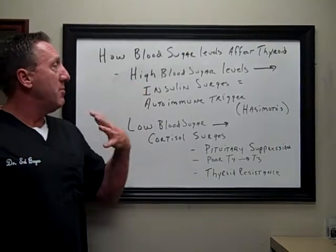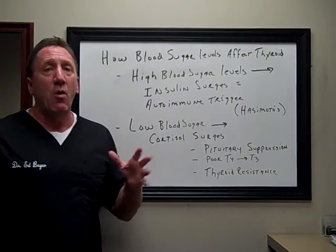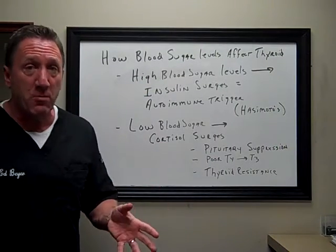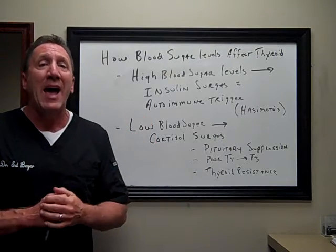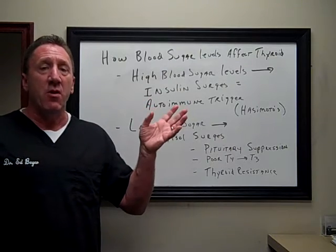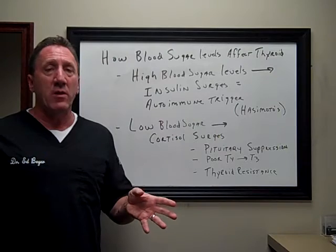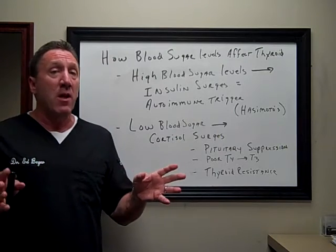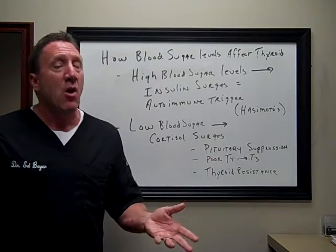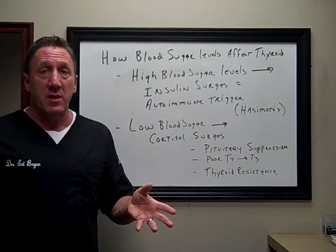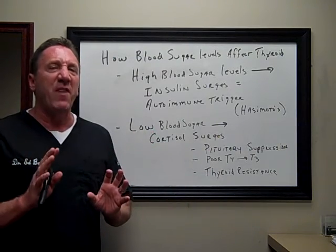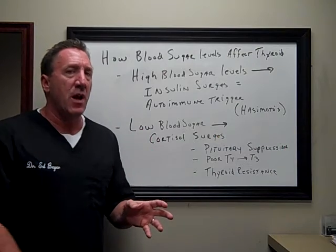Now let's talk about elevated blood sugar levels. Over 105 million Americans have a blood sugar problem where their blood sugar is going too high. If you're at 126 or above, and if your hemoglobin A1C is at 6.5% or higher, we give that a name — it's called type 2 diabetes. What it really is, is insulin resistance. Insulin is no longer effectively getting the glucose into your cells.